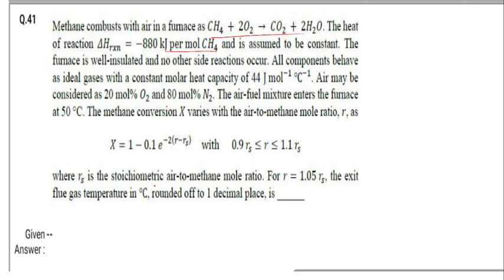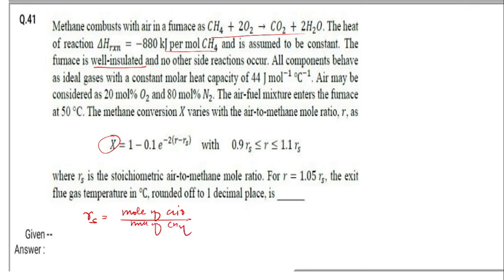The flue gas is the gas after burning, and since the furnace is well insulated, this is an adiabatic process. First, we must determine the conversion of methane at R equal to 1.05 Rs. Rs is the stoichiometric air-to-methane mole ratio — that is, moles of air to moles of methane at stoichiometric conditions.